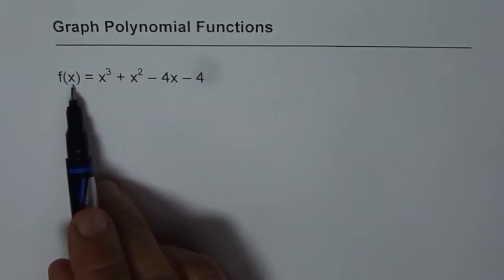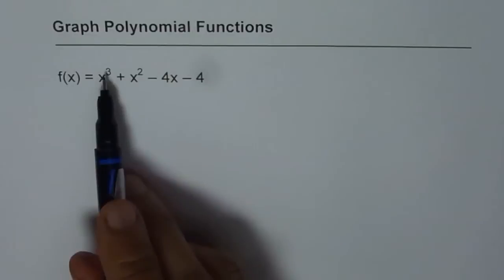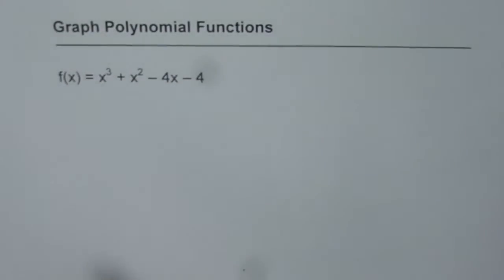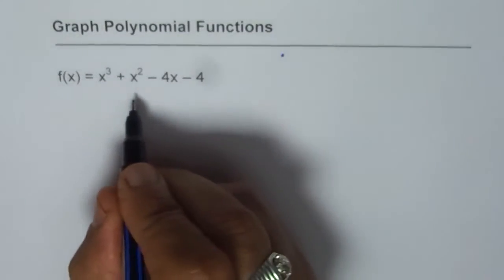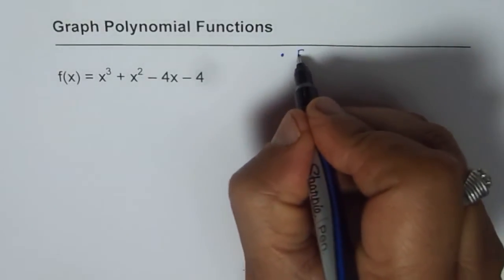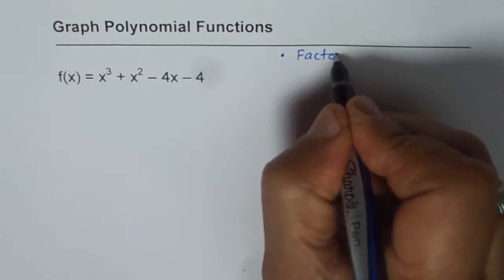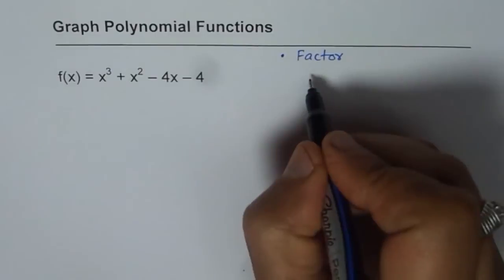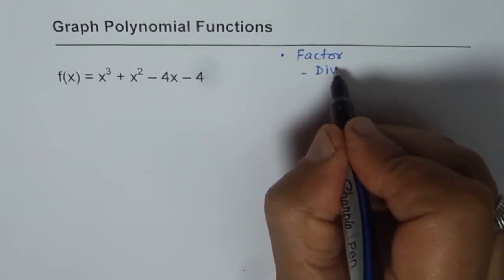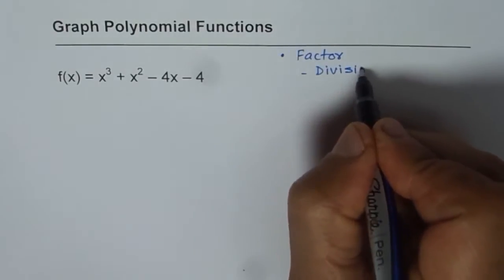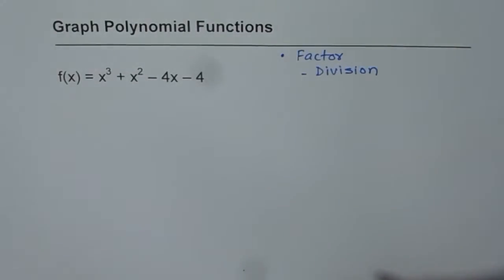So we have a function here f(x) = x³ + x² - 4x - 4. Let us see the steps involved in graphing this kind of function. First step of course is you have to factor. To factor you may require polynomial division. So that is the first step.